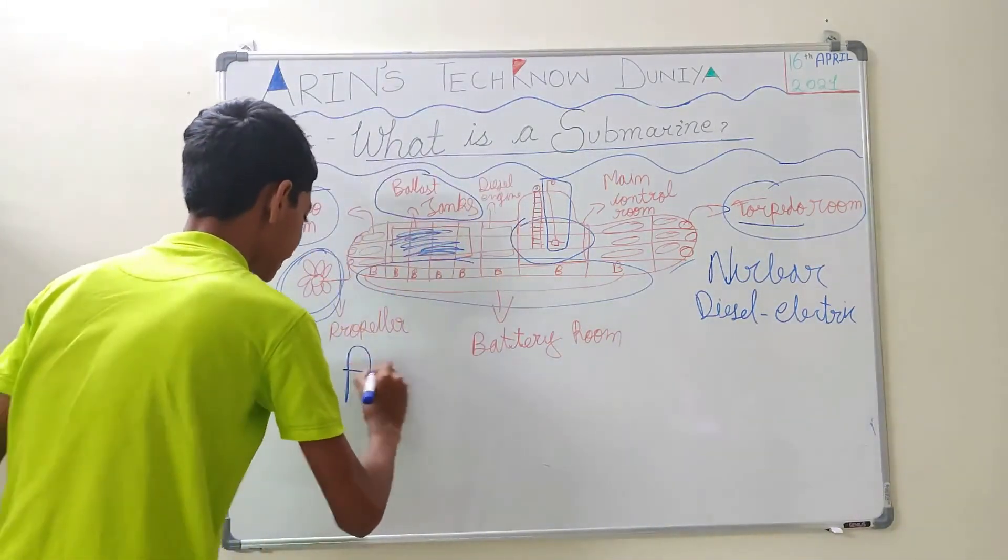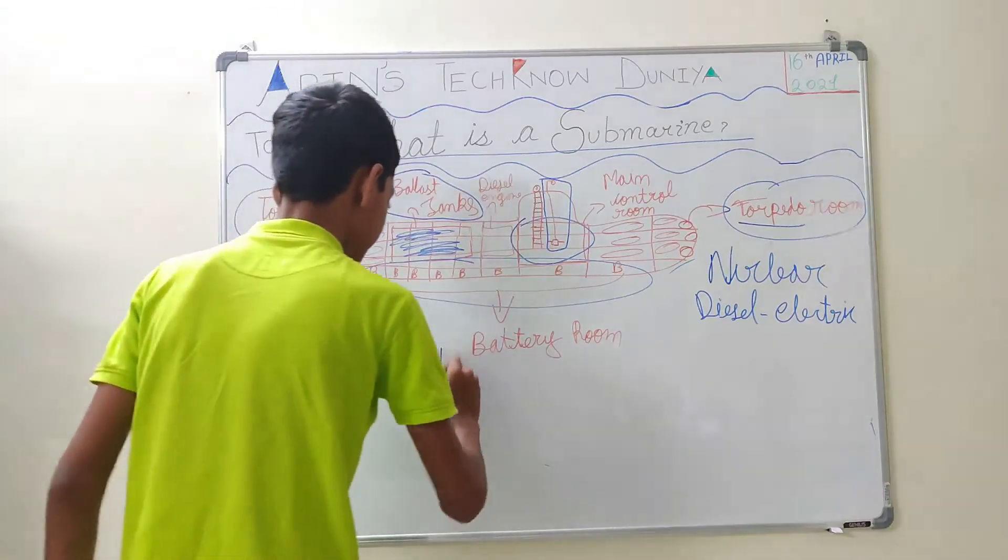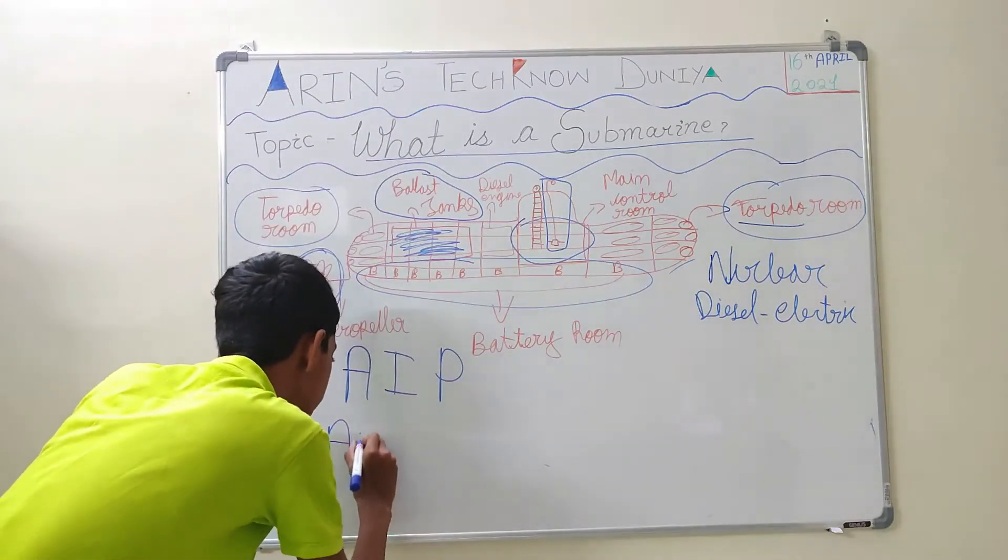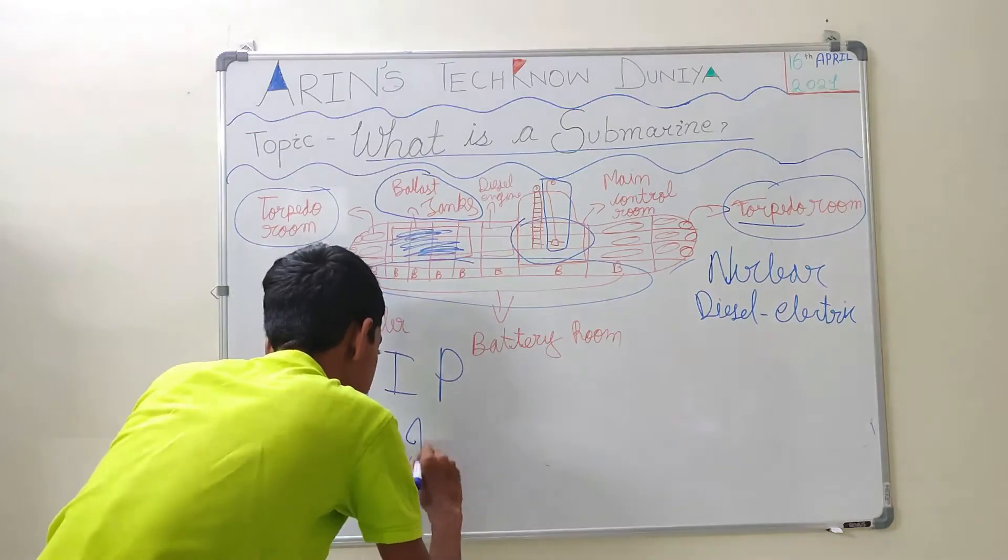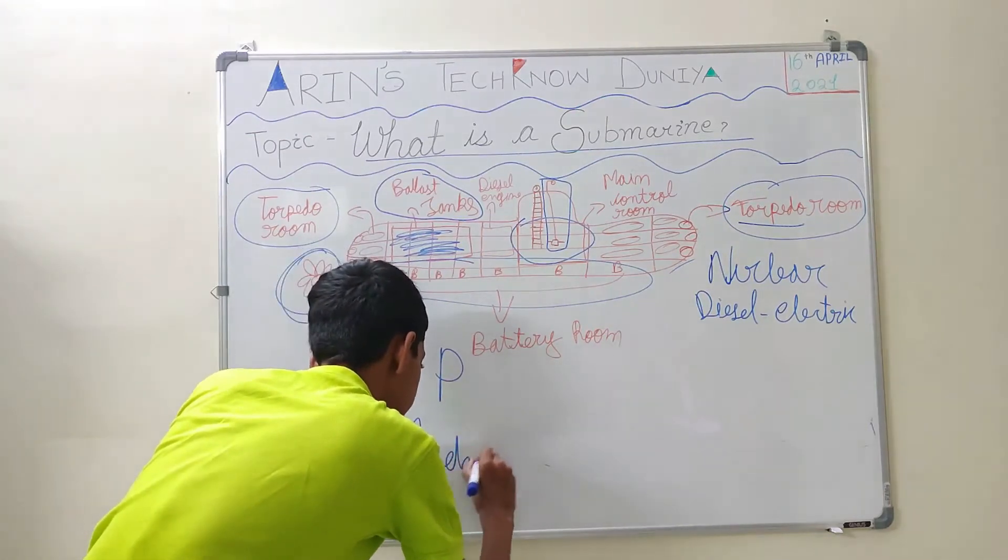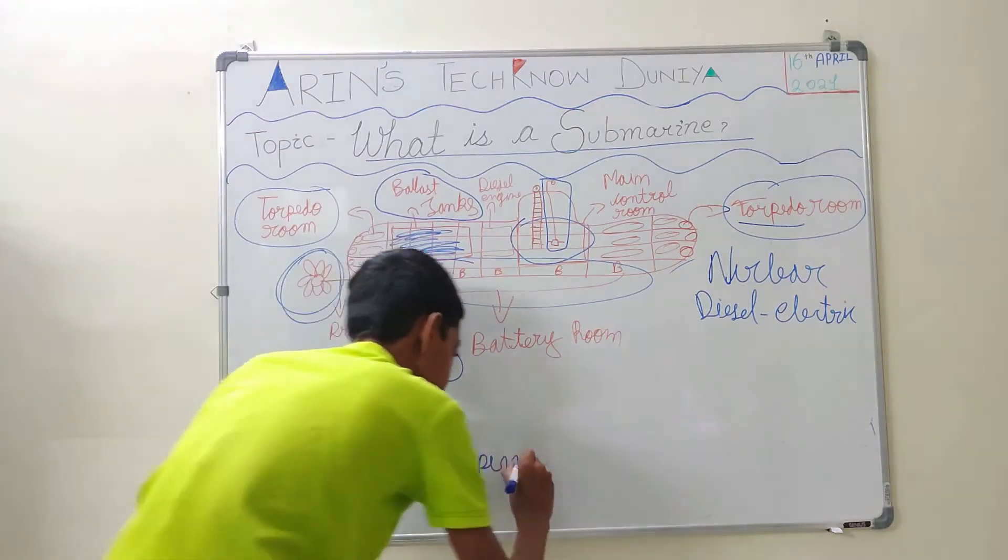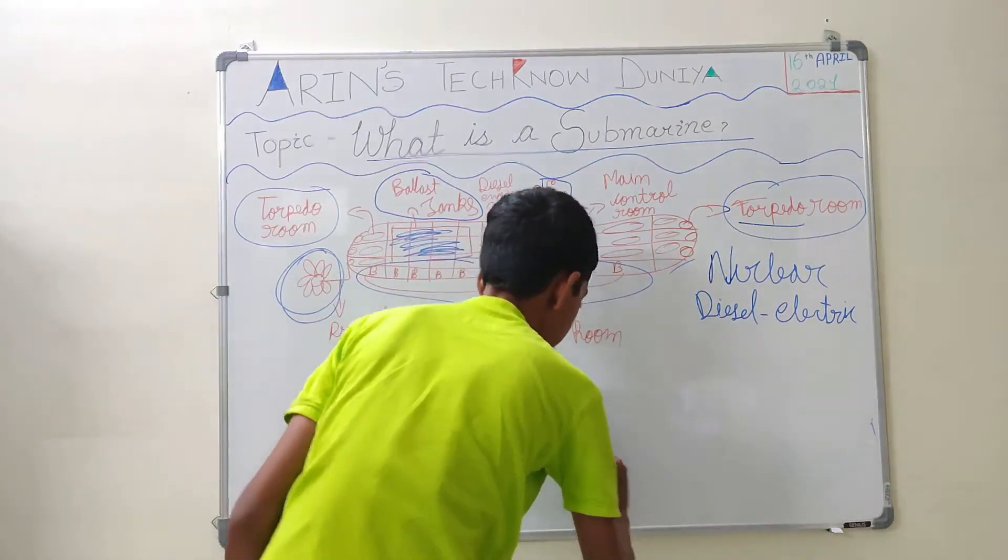That's why there is a new system called AIP. It means air independent propulsion.